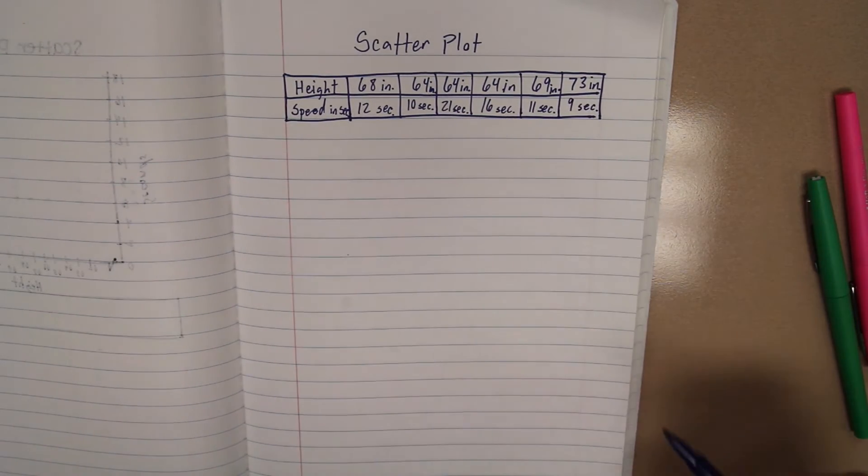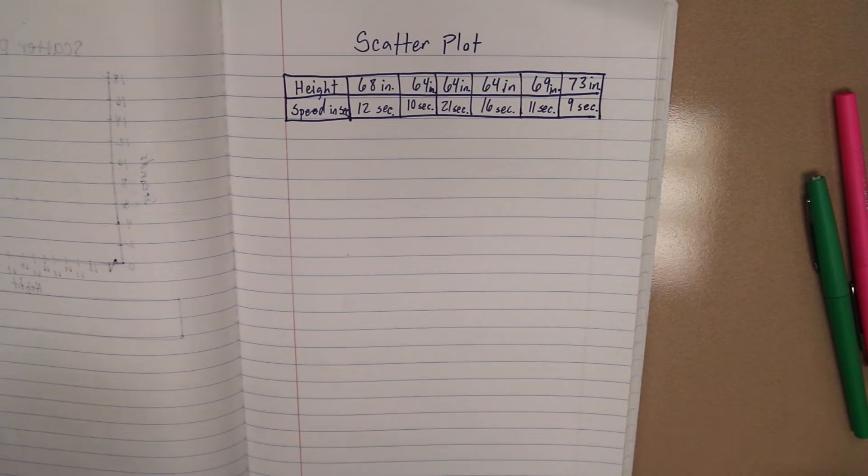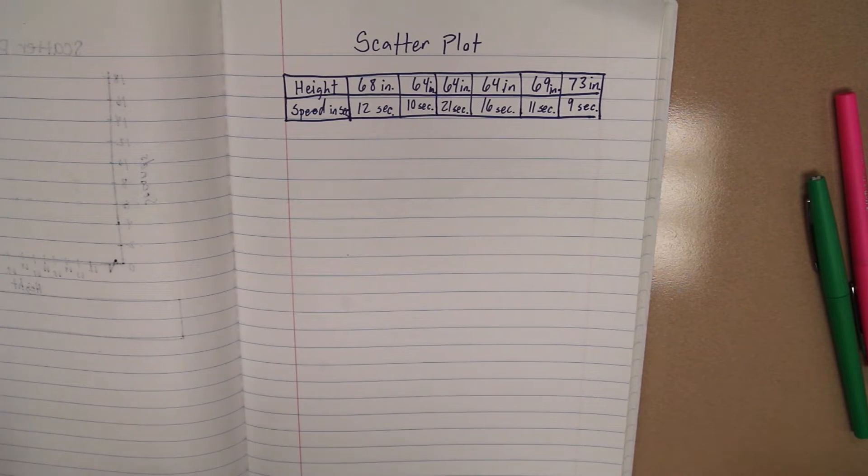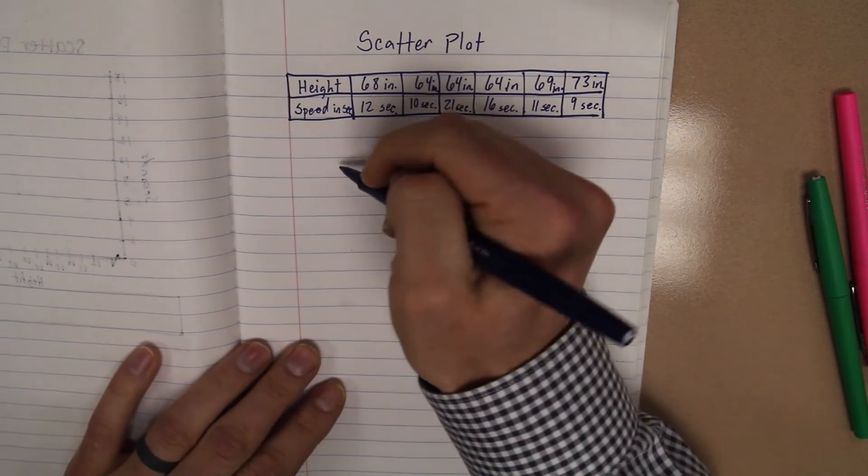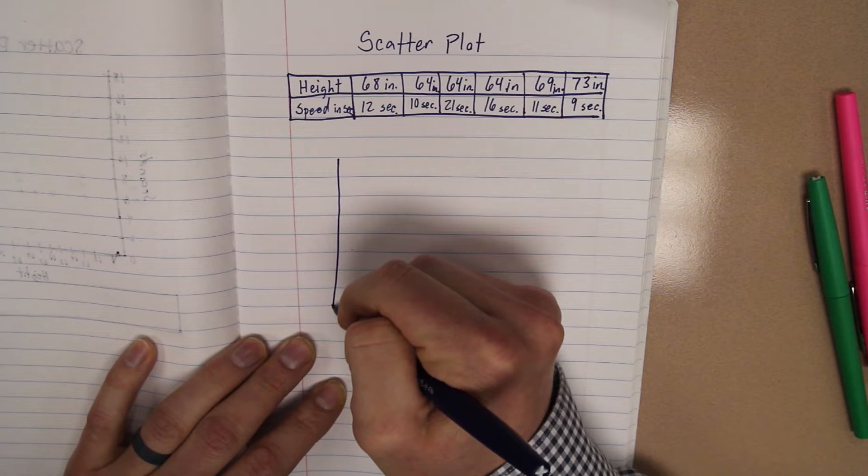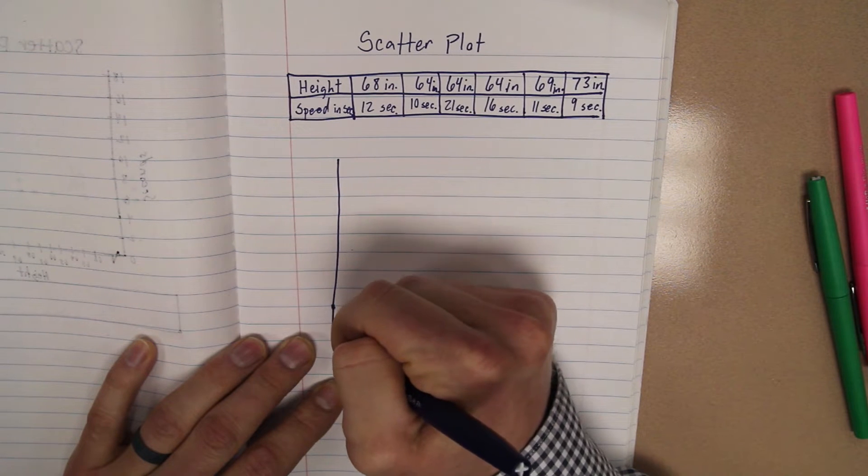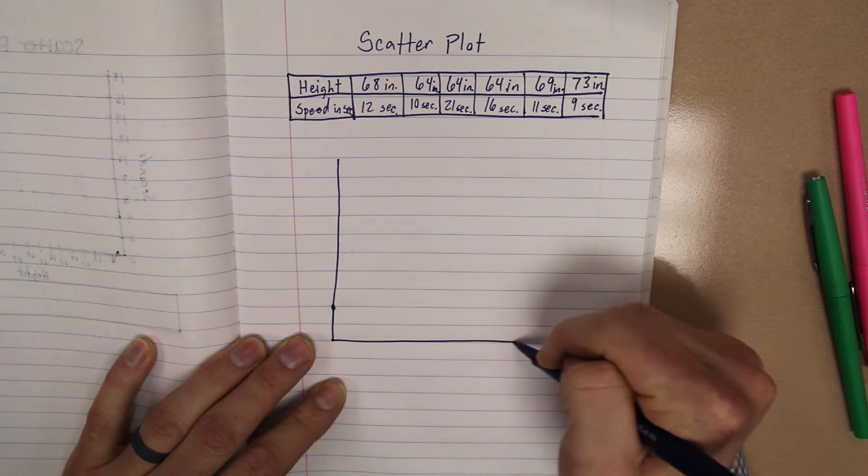So, was there any correlation? So what we're going to do now is we're going to take this and put it into a scatter plot. So I'm going to draw an L here, just like we did before.